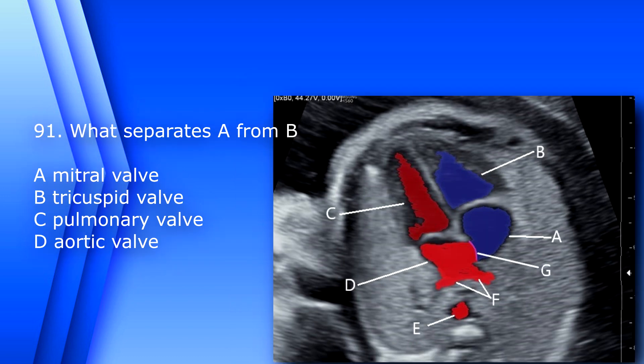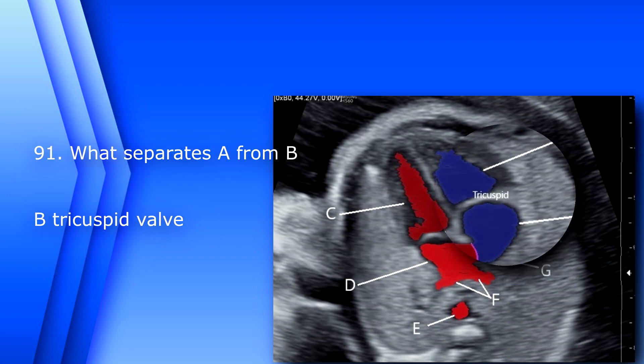Question 91. What separates A from B? A. Mitral valve. B. Tricuspid valve. C. Pulmonary valve. D. Aortic valve. The answer is B, tricuspid valve.